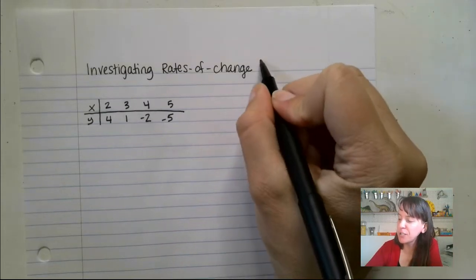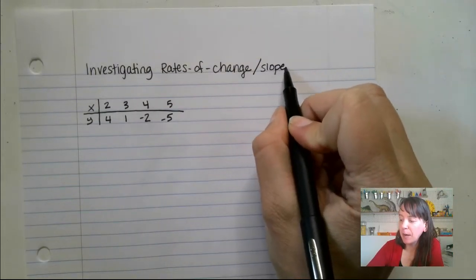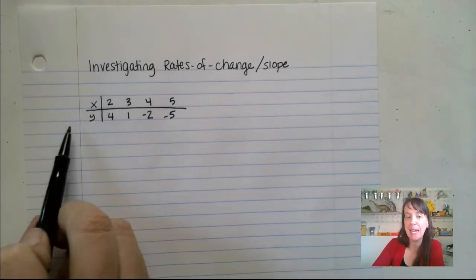Here's a neat thing. Rates of change is just the exact same thing as slope. So we're going to talk about how to find slope from a table here.